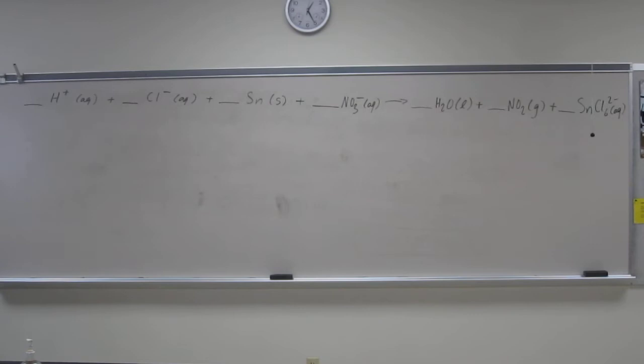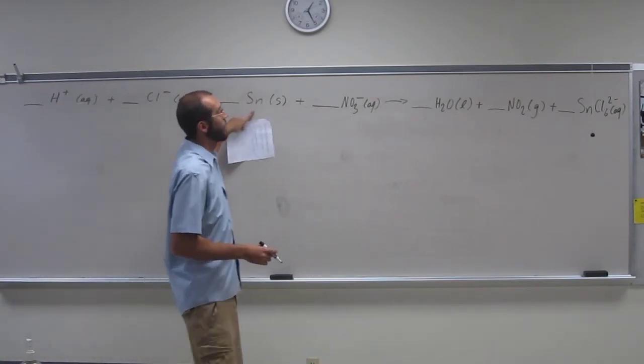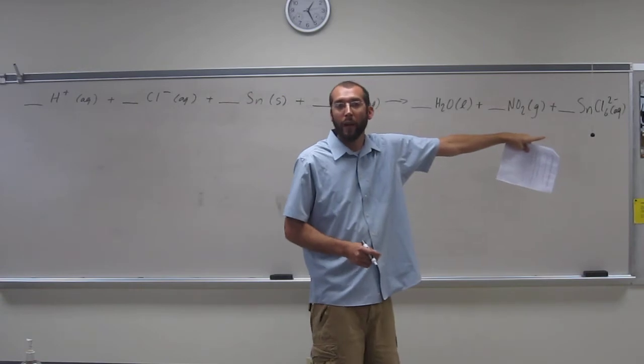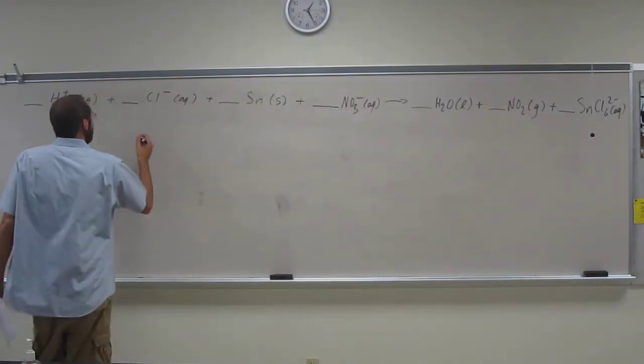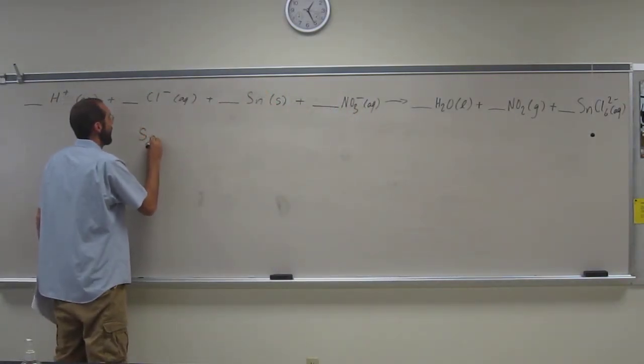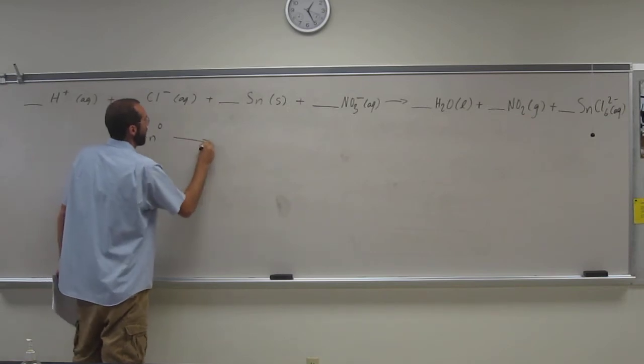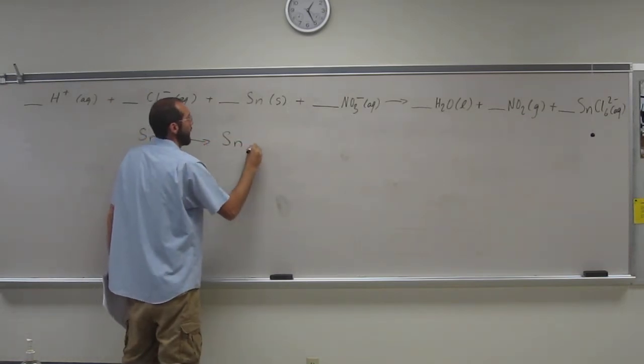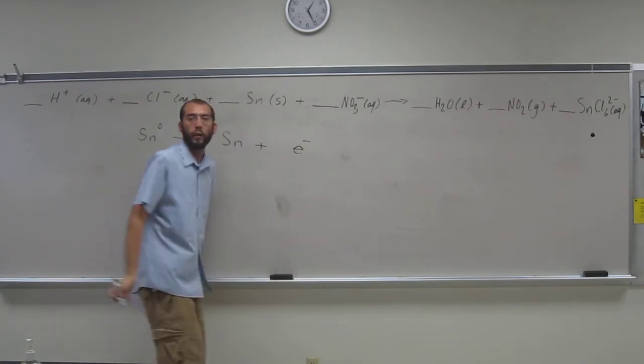So the first thing we need to do is figure out which thing got oxidized and which thing got reduced. Hopefully you can see that tin went from a zero state to something else. So Sn zero goes to Sn something plus some electrons.